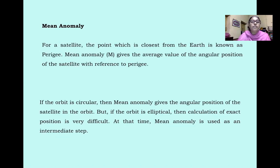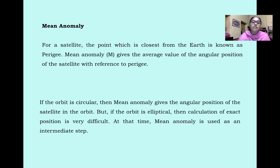Mean Anomaly: For a satellite, the point closest to the earth is known as perigee and the farthest point is apogee. Mean anomaly gives the average value of the angular position of the satellite with reference to the perigee. In a circular orbit, the mean anomaly gives the angular position directly, but if the orbit is elliptical, calculation of the exact position is very difficult, and at that time mean anomaly is used as an intermediate step.